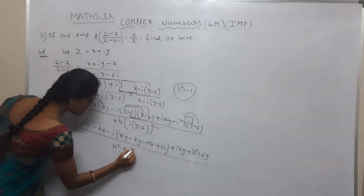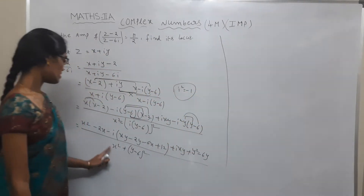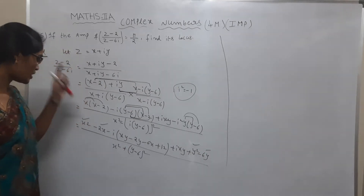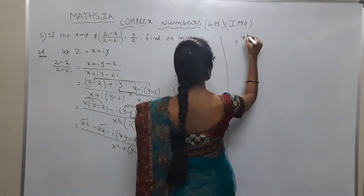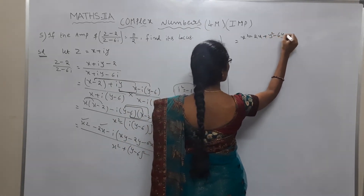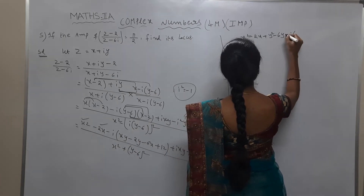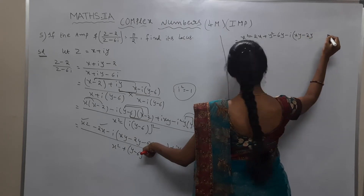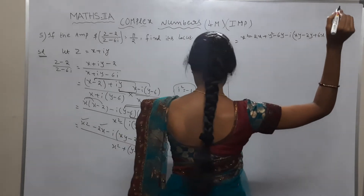Since i squared equals minus 1, the minus into minus gives plus (y minus 6) whole squared. Now take the real part: the real part is x squared minus 2x plus y squared minus 6y. The imaginary part, with i taken as common, is minus xy minus 2y plus 6x plus 12.